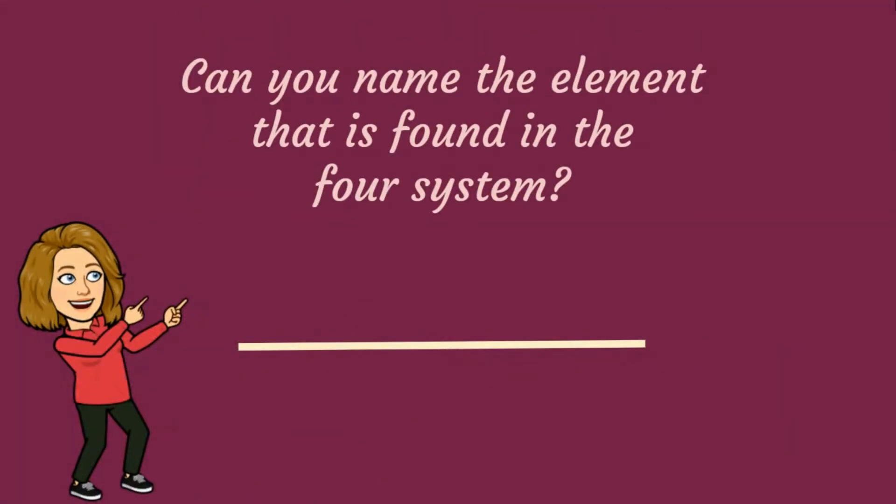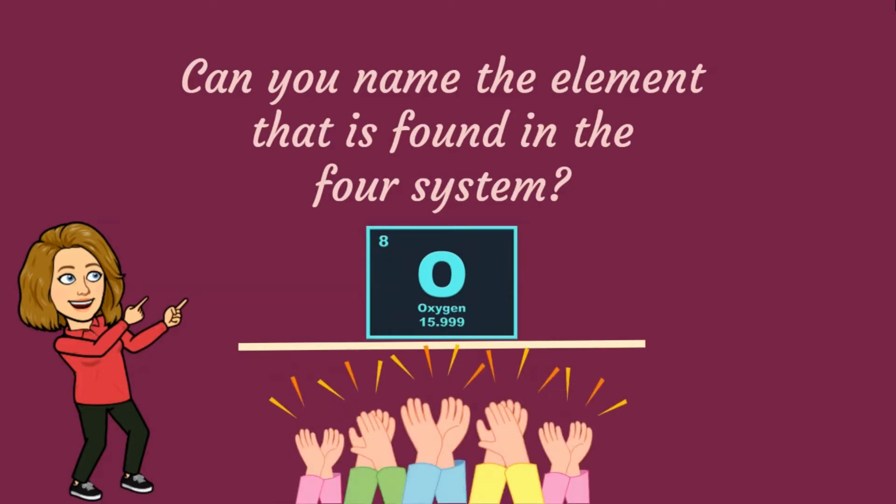Can you name the natural element found in the first system? Very good, that is oxygen. Now you realized how important oxygen is in our environment.